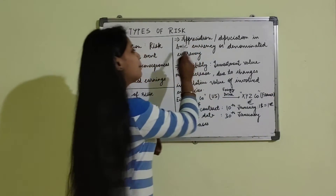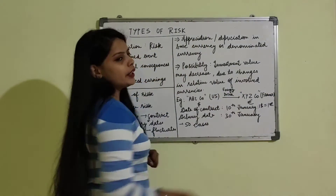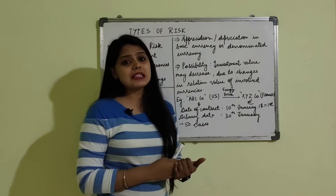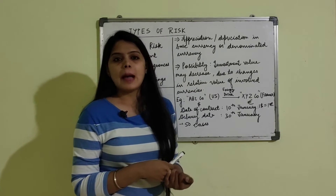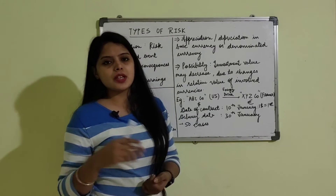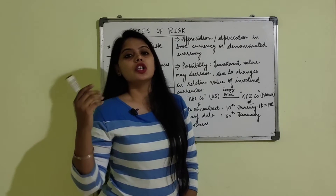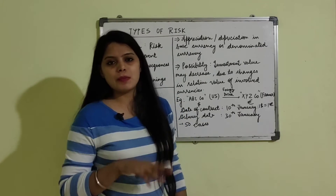For example, if we are in India and importing something from the US, the exchange rate is set on the date of contract. But when we receive the goods on the delivery date, if the rate fluctuates during the period between the contract date and the delivery date — whether in US dollar or Indian rupees — then whatever fluctuation occurs, the financial consequences can result in a loss or reduced earnings. That is termed as exchange risk. There can be appreciation or depreciation in the base currency or denominated currency.